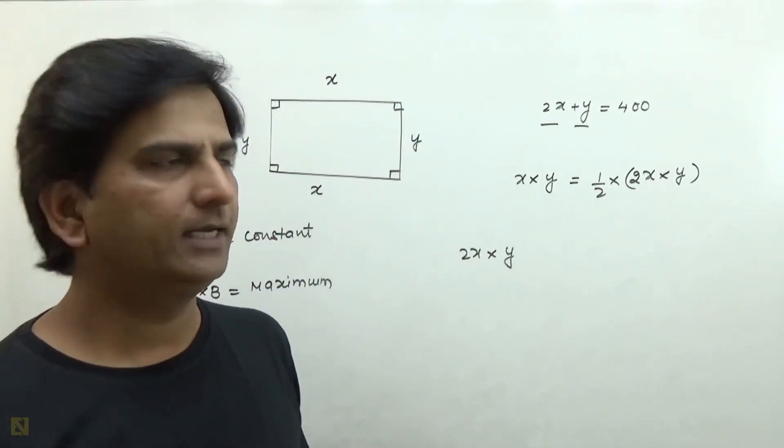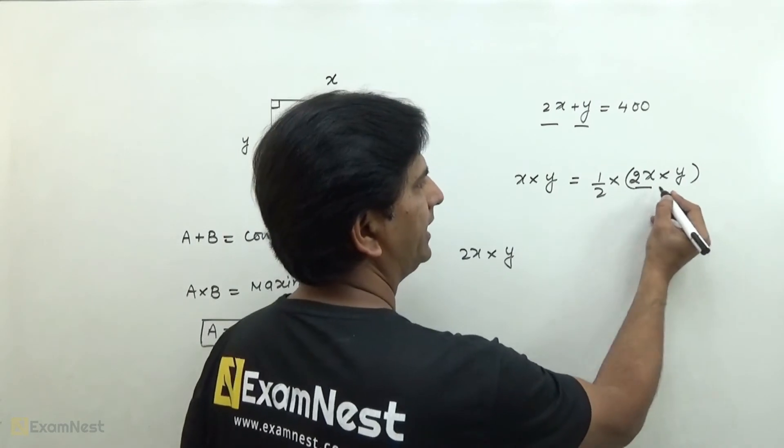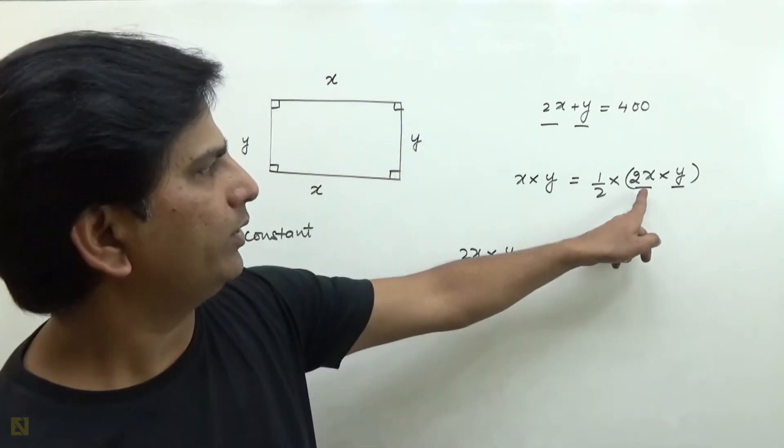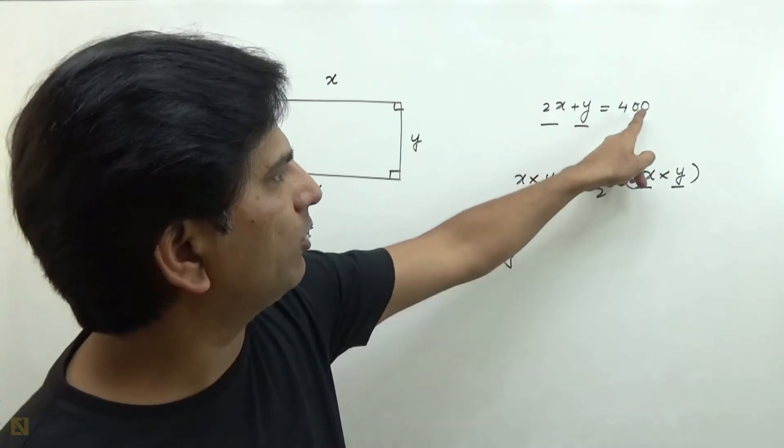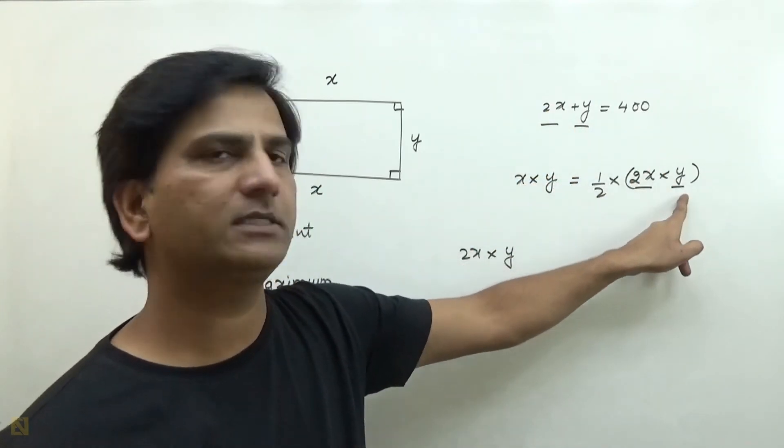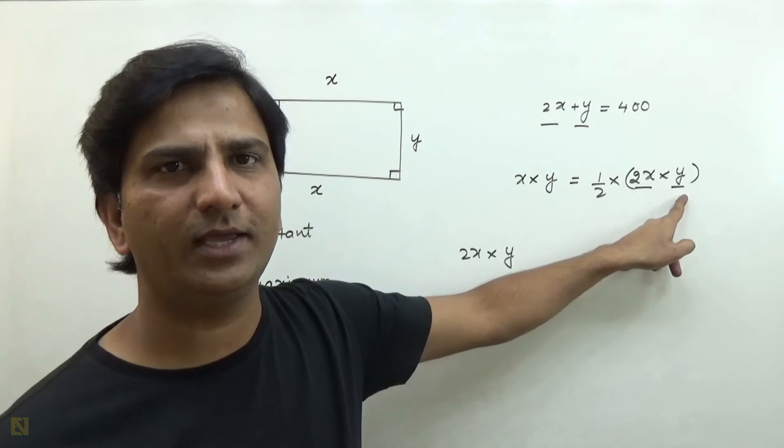This is x into y. Now if you treat this as A and this as B, then A into B maximum when? If A plus B is constant given, then A into B is maximum when A and B are equal to each other.